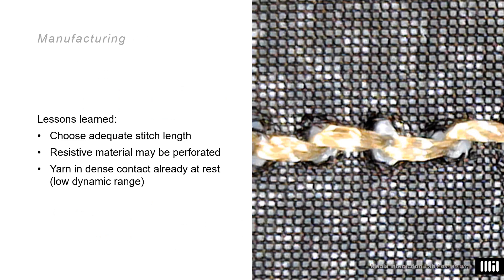I want to close with some lessons learned in terms of manufacturing, because this is highly important in practice. First of all, don't choose the stitch length too low. Not only would you reduce the dynamic range, but you may also destroy or severely harm the resistive sheet, which could even rip in the worst case.